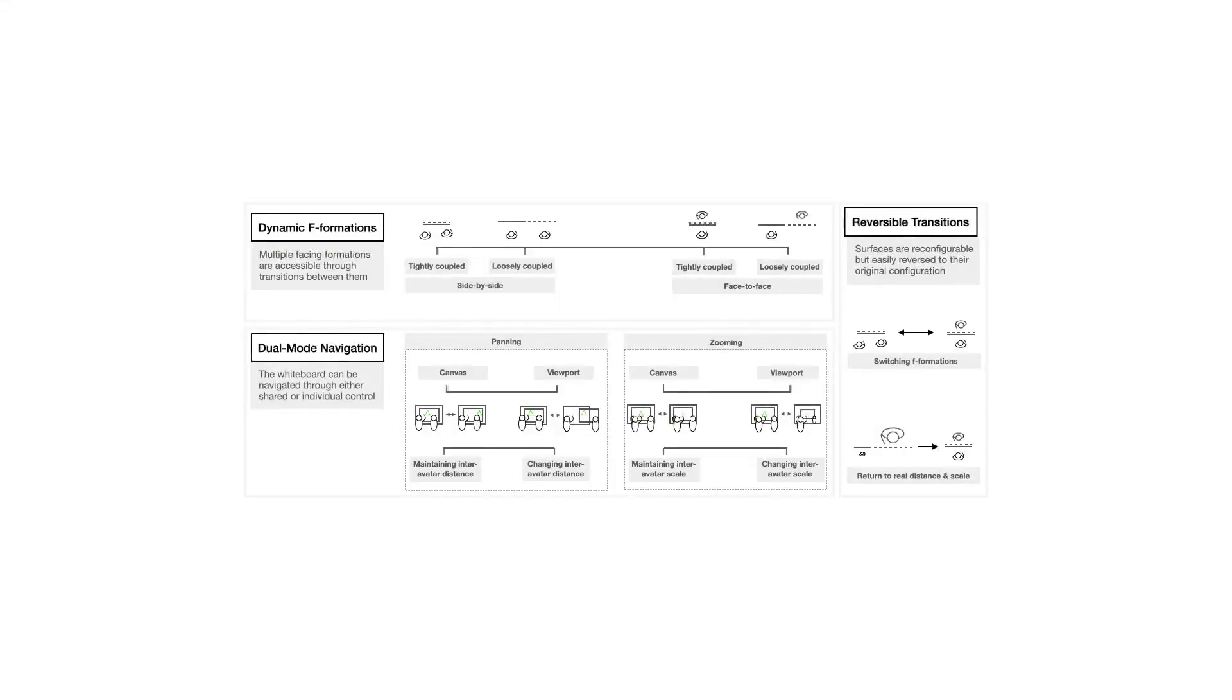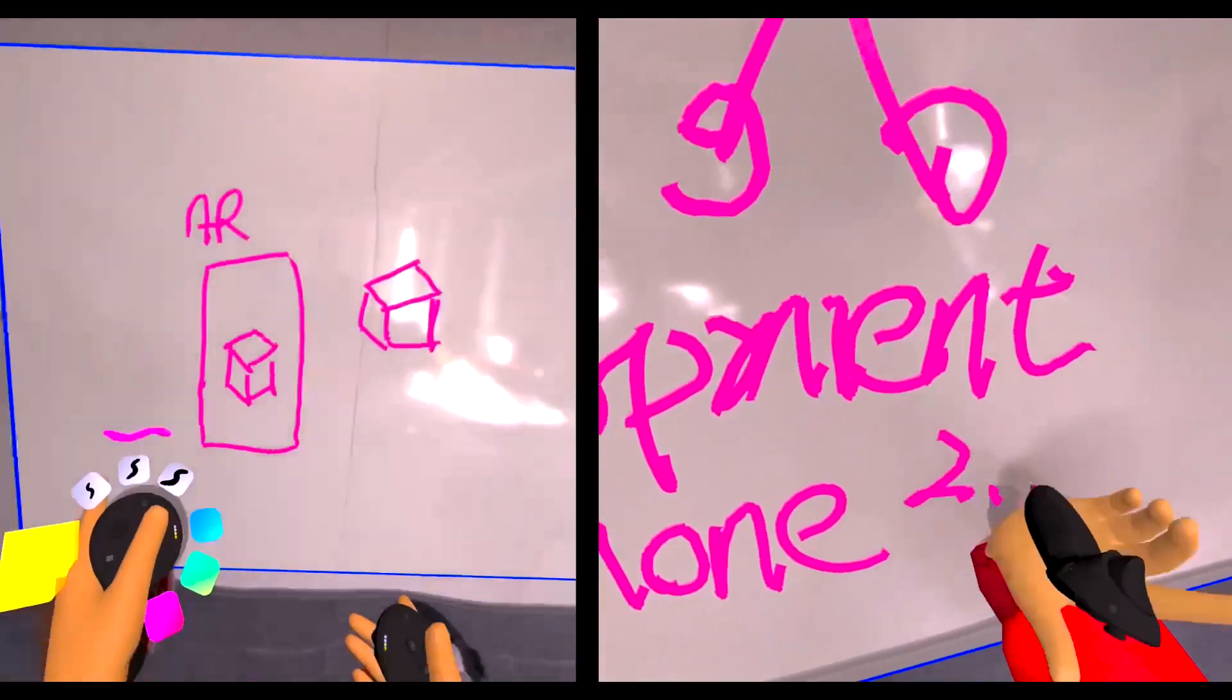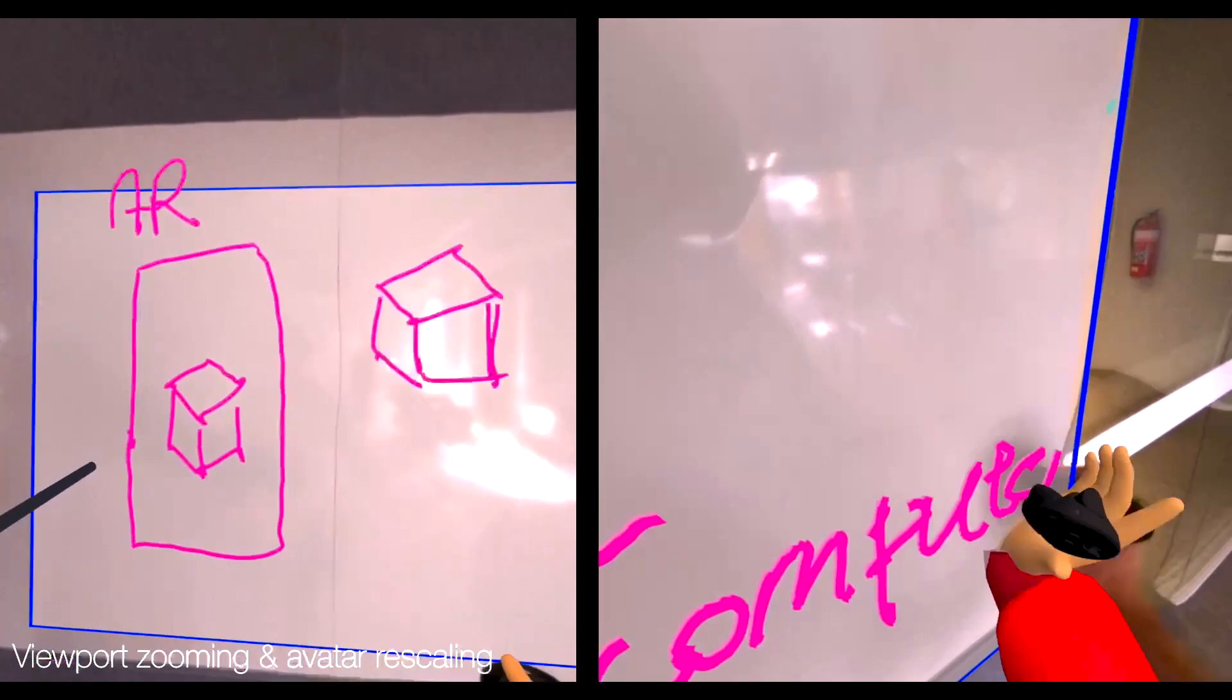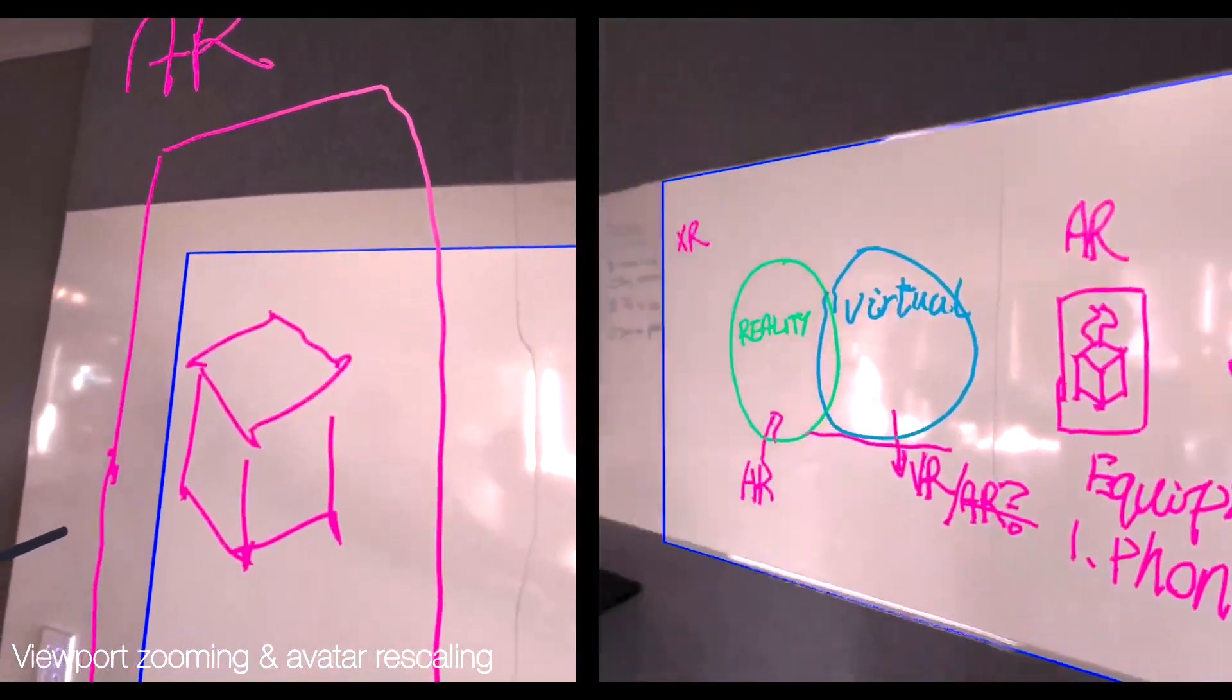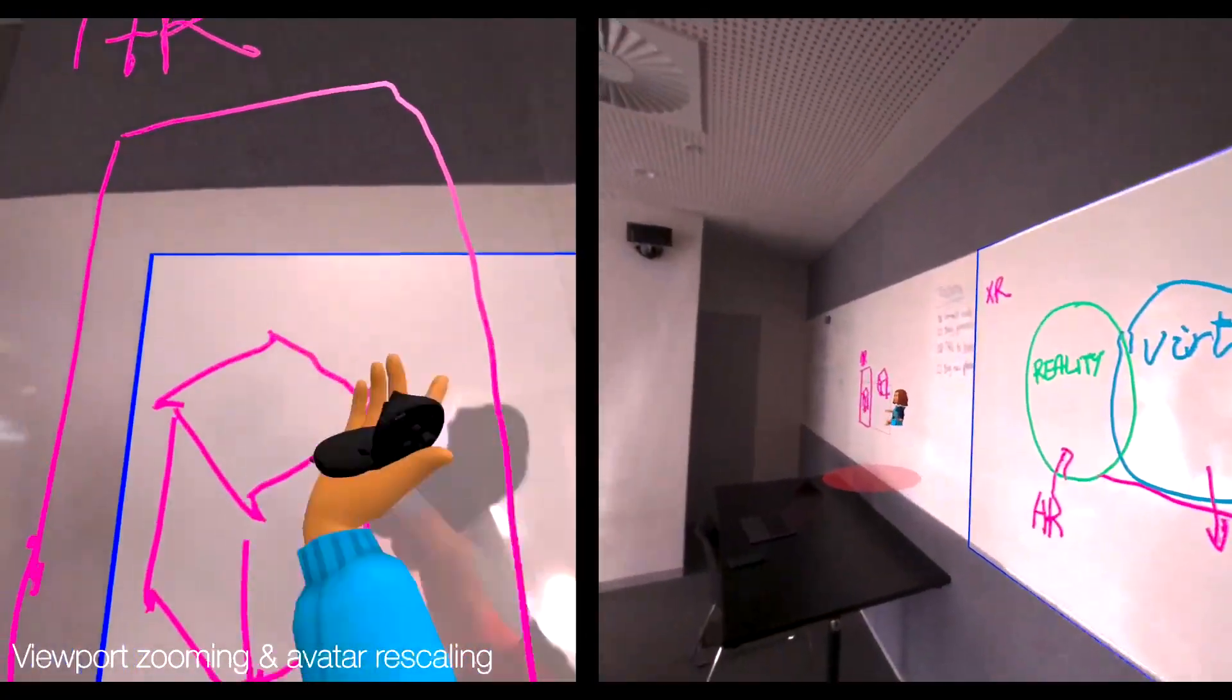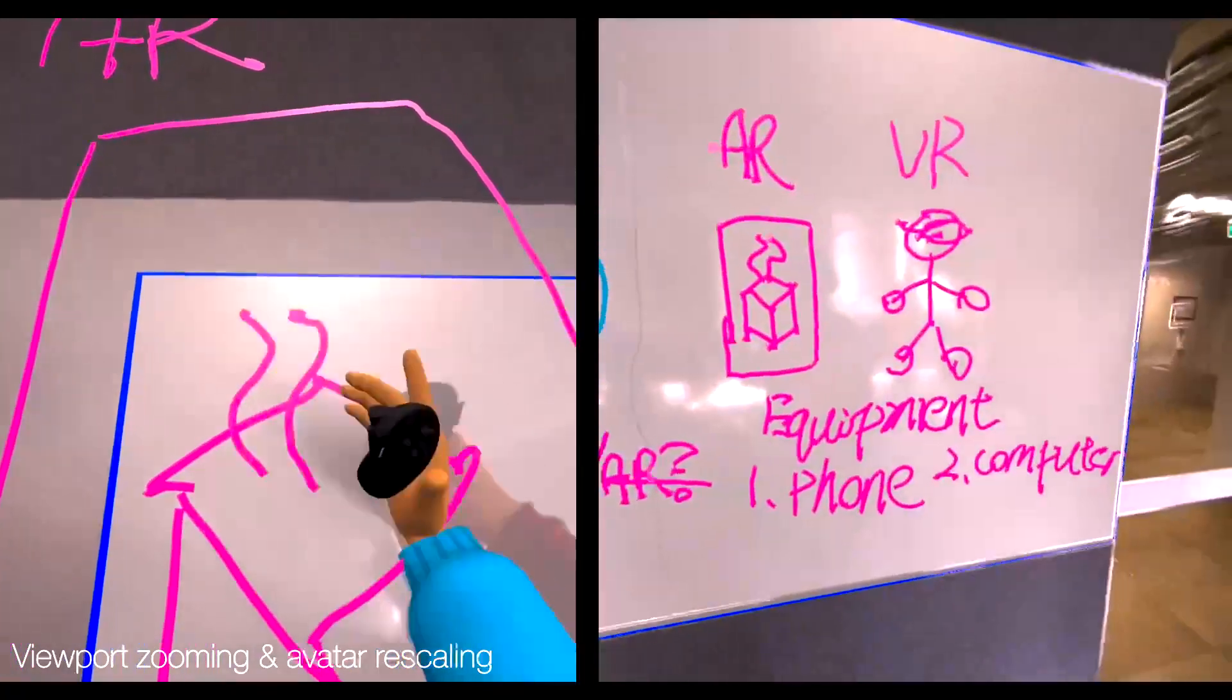The third principle is that surfaces can be reconfigured, but also easily reversed to the original configuration. While they work independently, Alice can zoom in her viewport on details of the content. Instead of disrupting Bob's view, it changes the relative scaling of avatars.